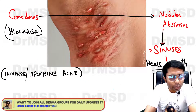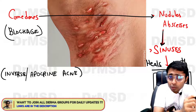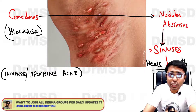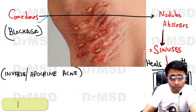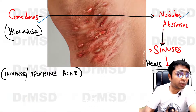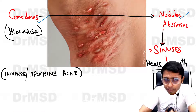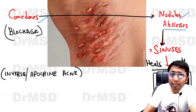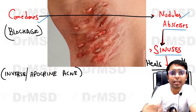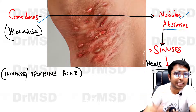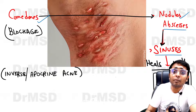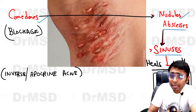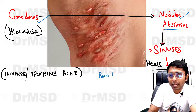Clinically there can be comedones present initially, which can later on enlarge to become nodules, which can be filled with pus — where they will be called abscesses — and they can finally discharge the pus onto the skin surface forming sinuses, which ultimately are going to heal with band-like scarring.